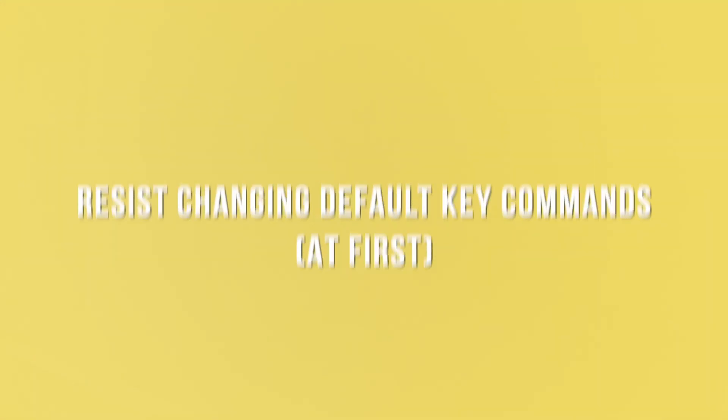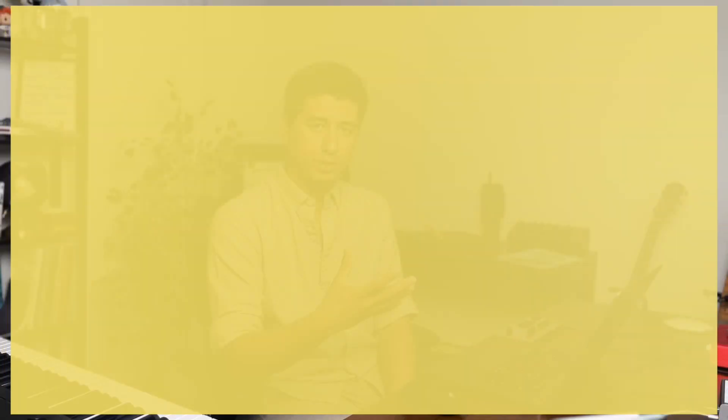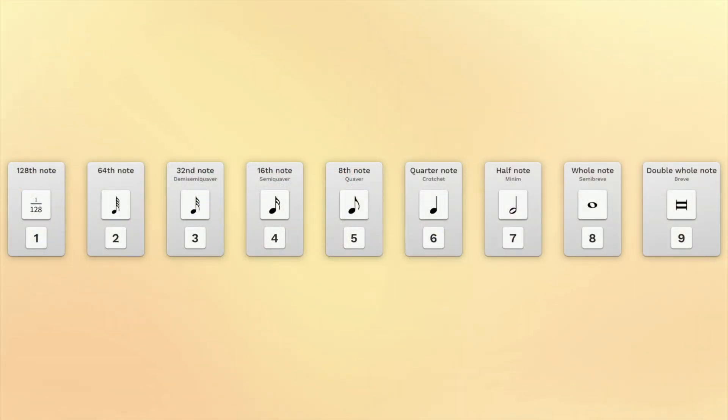Now I'm out of note input mode. This last G looks like it needs to be a half note and dotted. I'll select 7 for half note and hit the period button to add a rhythm dot. This brings me to my next point: try to resist the urge to change the default key commands for the new software. All of the key commands are laid out very logically across the keyboard in Dorico. Spend time getting to know the layout. After maybe a few months if it's really not sticking, feel free to change them — but for the very beginning, try to get used to the new way of doing things.